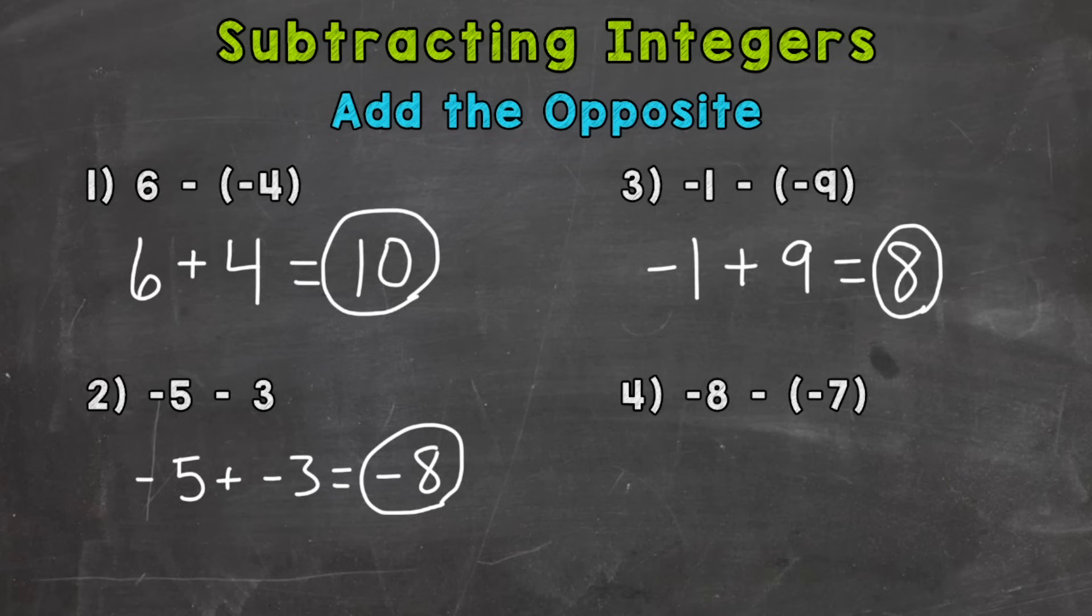So remember, when we subtract a negative, we actually increase in value from what we started with. For example, number three, negative 1 we started with, and we increased by a positive 9 there. We increased by 9 to give us an answer of a positive 8.